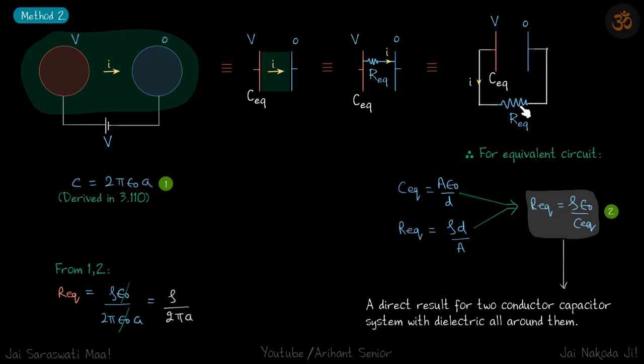For this equivalent circuit, which we made from this, C equivalent is A epsilon by D. And R equivalent, because it's filled in this space, is rho into D by A - rho into this distance D by area of the plate, which is A. Now if we get rid of A by D here, we get R equivalent is equal to rho epsilon 0 by C equivalent.